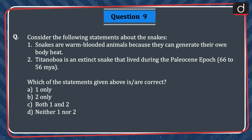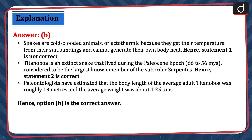Next question: consider the following statements about snakes. 1. Snakes are warm-blooded animals because they can generate their own body heat. 2. Titanoboa is an extinct snake that lived during the Paleocene epoch. Which of the statements given above is or are correct? 1 only, 2 only, both 1 and 2, or neither 1 nor 2? The correct answer is option B, 2 only. Snakes are cold-blooded or ectothermic animals because they get their temperature from their surroundings and cannot generate their own body heat. Hence, statement 1 is not correct. Titanoboa is an extinct snake that lived during the Paleocene epoch, considered to be the largest known member of the suborder Serpentes. Hence, statement 2 is correct. Paleontologists have estimated that the average adult Titanoboa was roughly 13 meters long and weighed about 1.25 tons. Hence, option B is the correct answer.